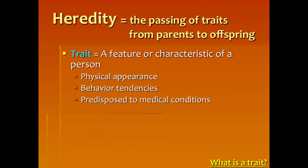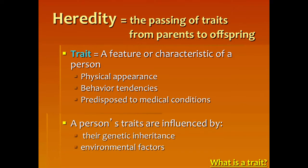Let's first talk about what a trait is. A trait is a feature or characteristic of a person. When we talk about somebody's physical appearance — blue eyes or blonde hair — those are traits in our DNA. Also, behavior tendencies can be a trait, and being predisposed to certain medical conditions, like being a hemophiliac or diabetic. So traits are features or characteristics of a person. A person's traits are influenced by their genetic inheritance from their parents, and also environmental factors.